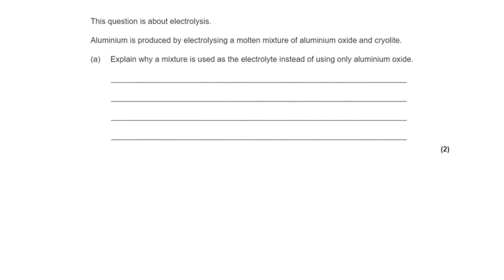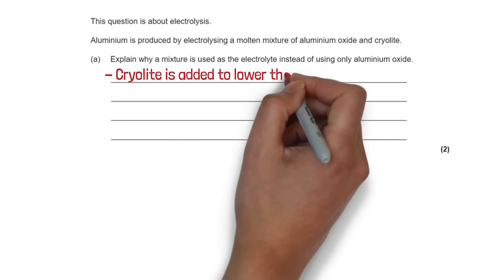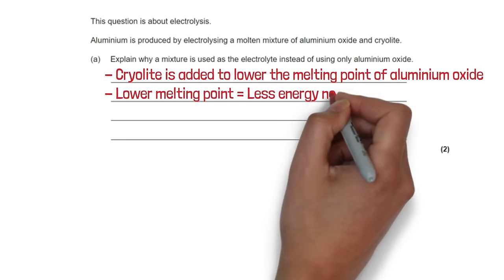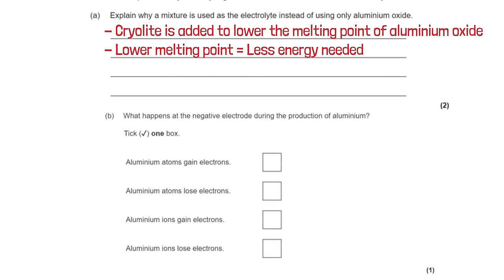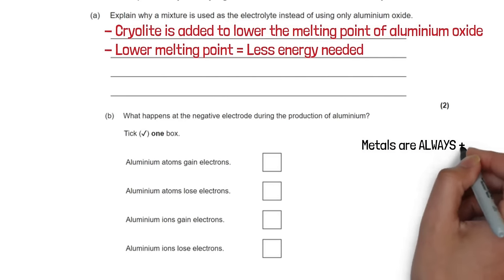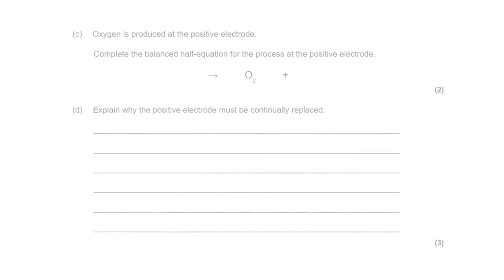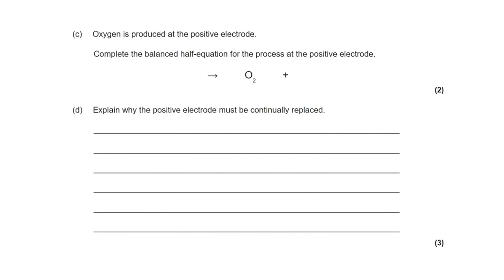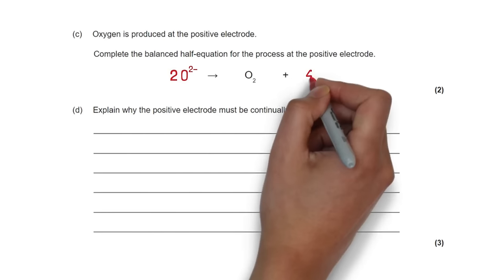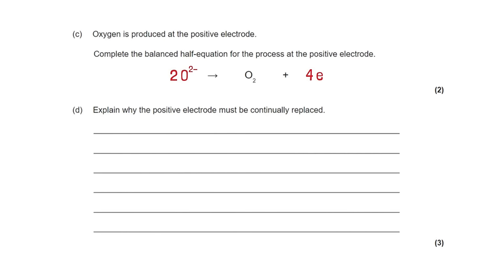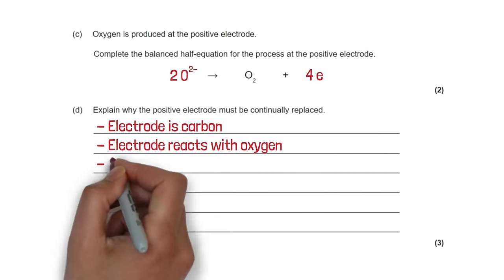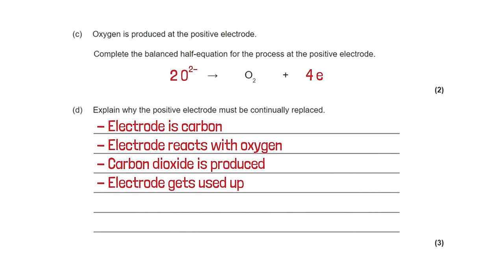Aluminium is produced by electrolyzing a molten mixture of aluminium oxide and cryolite. Cryolite is added to lower the melting point of aluminium oxide, requiring less energy. At the negative electrode, aluminium ions (which are positive) gain electrons to become neutral — aluminium ions gain electrons. Oxygen is produced at the positive electrode; the balanced half equation is: 2O²⁻ → O₂ + 4e⁻. The positive electrode must be continually replaced because it is made from carbon, and it reacts with oxygen to produce carbon dioxide, gradually being used up.